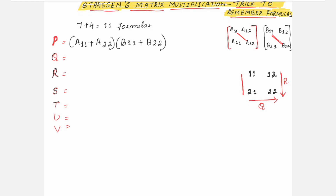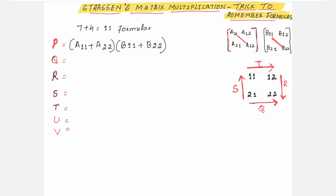You place the operations — plus and minus — for each formula. For Q, it is plus. For T, it is plus. For S, it is minus. For R, it is minus. You can easily remember: wherever there is left to right, it is plus, and the other two possibilities — top to bottom or bottom to top — it is minus. Start writing the formulas with this in mind.